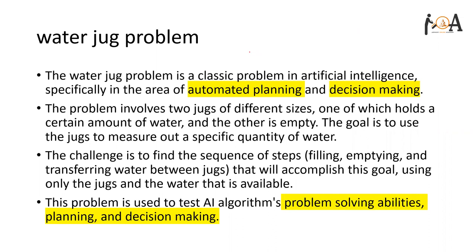Let's start from the very basic concept about the water jug problem — the problem scenario. Water jug problem is a classic problem of artificial intelligence; specifically it is used in the area of automated planning and decision making. This problem involves two jugs of different sizes. We take J1 and J2 as two jugs and assume the capacity of J1 as X and capacity of J2 as Y.